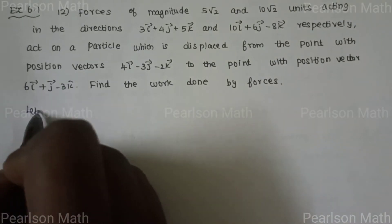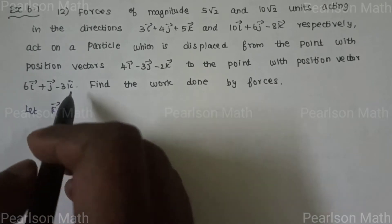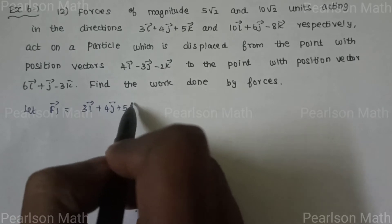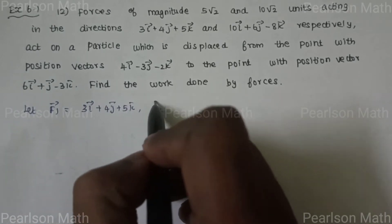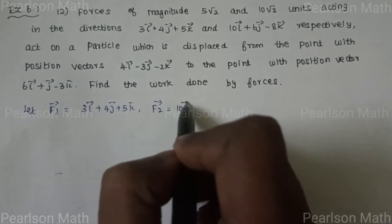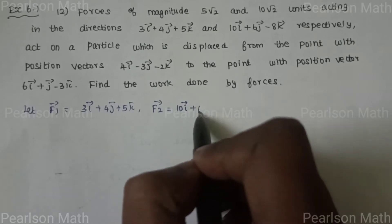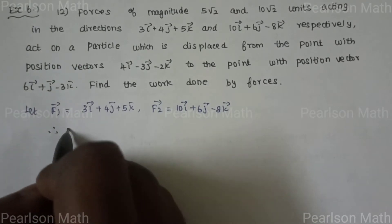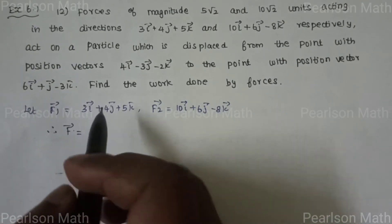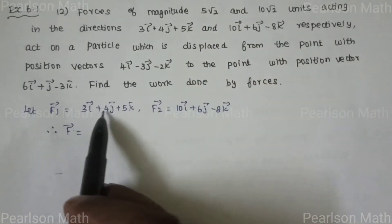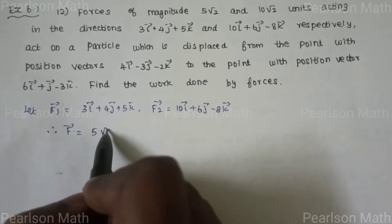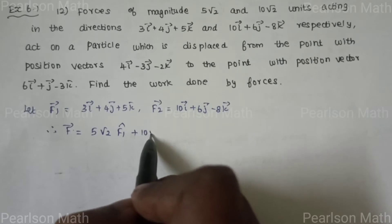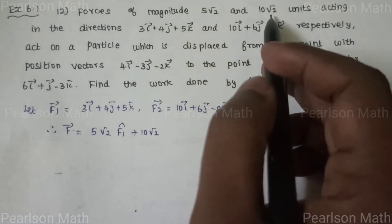Let F1 vector = 3i + 4j + 5k and F2 vector = 10i + 6j - 8k. The total force vector F = magnitude 5√2 × F1 cap + 10√2 × F2 cap.